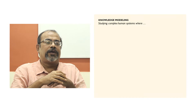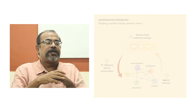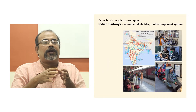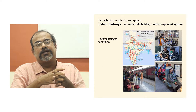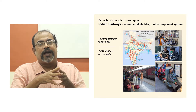Knowledge modeling is needed when we want to study complex human systems in our society. Let's take an example of the Indian railways, where it's just such a complex system — thousands of trains running at the same time.